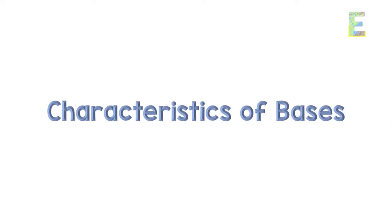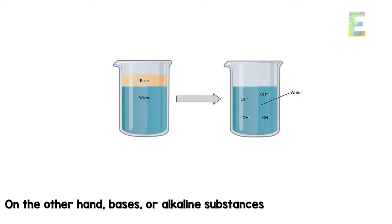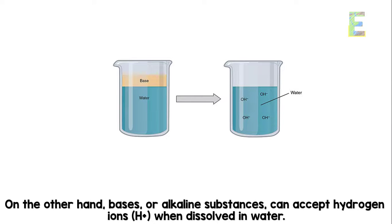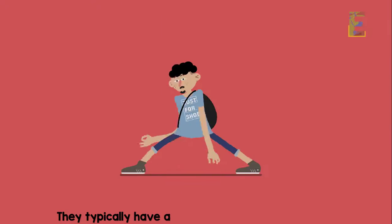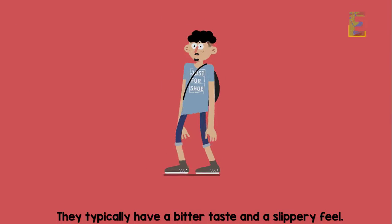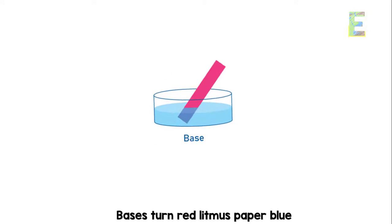Characteristics of bases. On the other hand, bases, or alkaline substances, can accept hydrogen ions when dissolved in water. They typically have a bitter taste and a slippery feel. Bases turn red litmus paper blue.